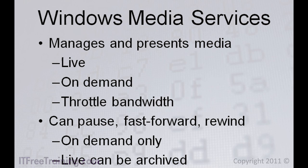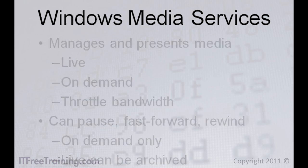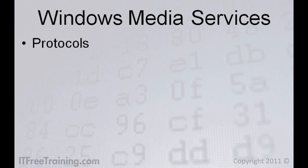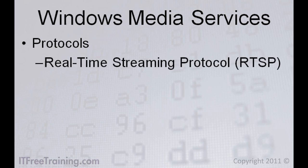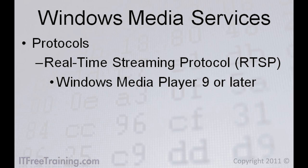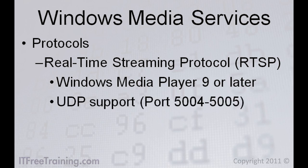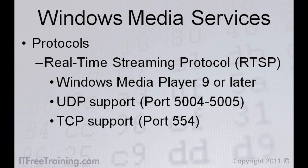Windows Media Services supports two protocols for accessing media. The first is Realtime Streaming Protocol, or RTSP, which provides an efficient method to access video and audio content and requires Windows Media Player 9 or later. RTSP has UDP support if the client and network support it; otherwise, TCP will be used. The ports used can be changed if they do not meet your network requirements.